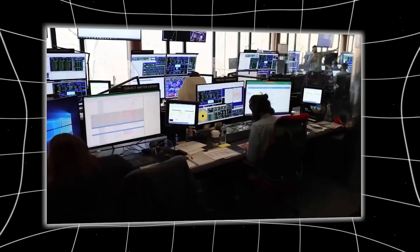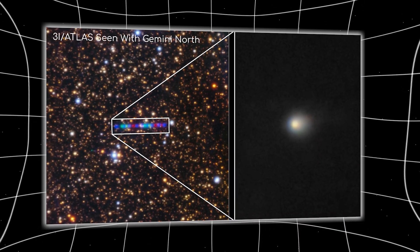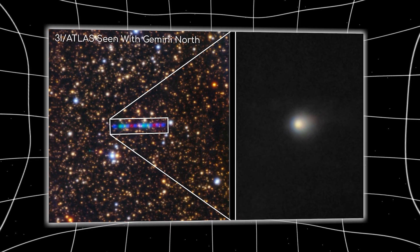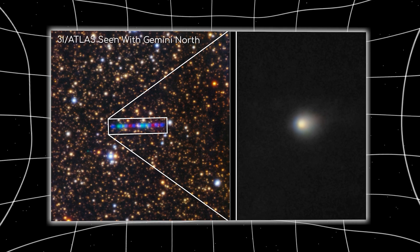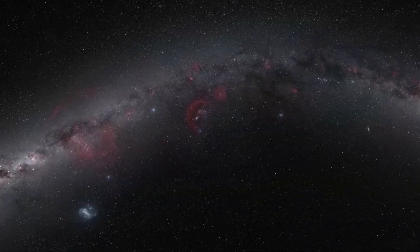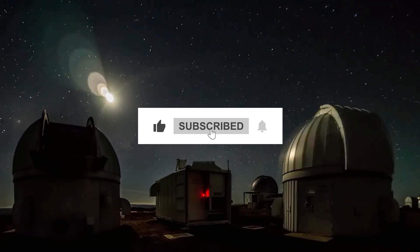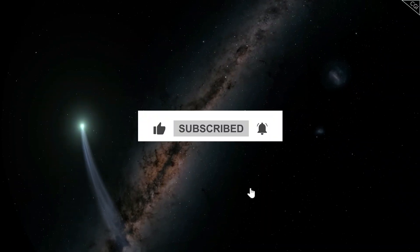Something that defied every natural law we thought we understood. Scientists named it 3I Atlas, but the name didn't capture the tension it brought with it. Because this wasn't just a rock from another star system. It moved too cleanly, rotated too evenly, and reflected too much light for its size. It behaved less like a fragment, and more like a machine.